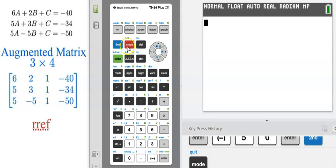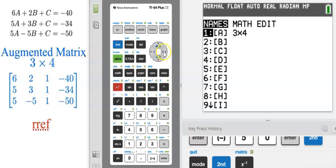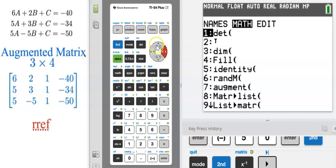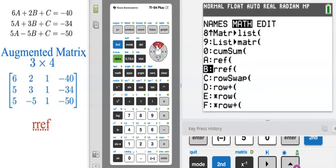Now we're going to perform some math. We want to perform the reduced row echelon math, so we're going to go second matrix, tab over to math. I like to tab up because it's a little quicker to navigate to reduced row echelon form. We're going to hit enter.